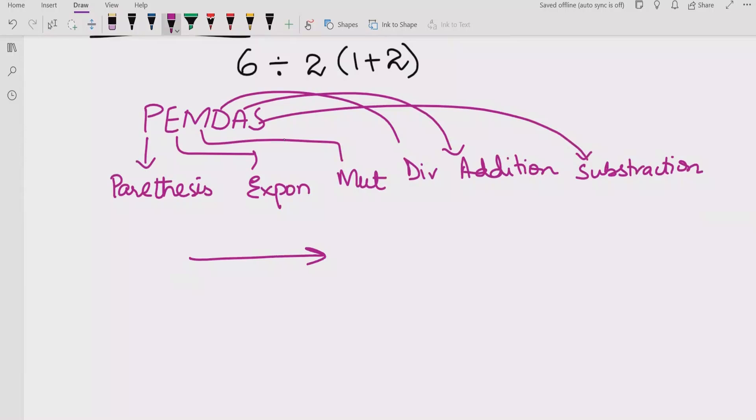We always go in left to right direction. If we have this question, 6 divided by 2, parenthesis 1 plus 2, we will go in left to right direction always. And now we will see first is parenthesis.